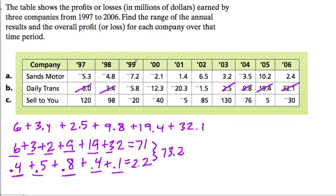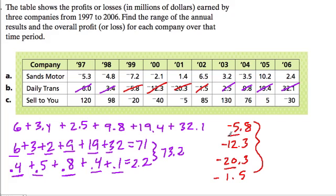And now let's deal with the loss. We have negative 5.8, negative 12.3, negative 20.3, and negative 1.5. Here we have negative 20, negative 25, negative 37, negative 38. This is 0.5, and then 0.3 is 0.8. Another 0.8 is 1.6, and this is 1.9, negative 1.9. Add up these two and I get negative 39.9.